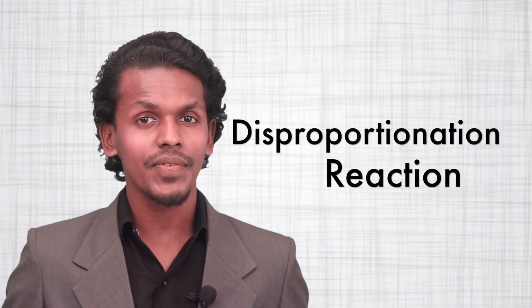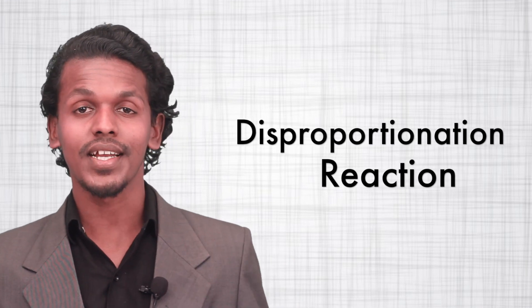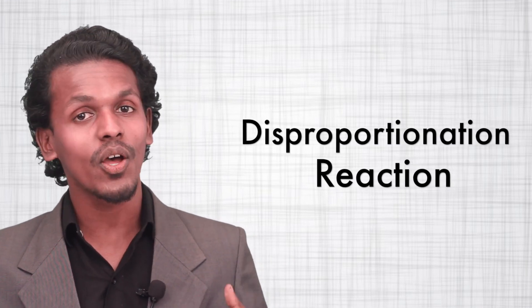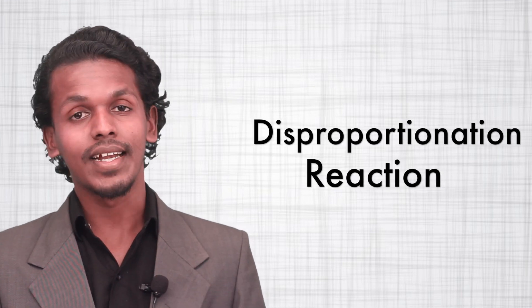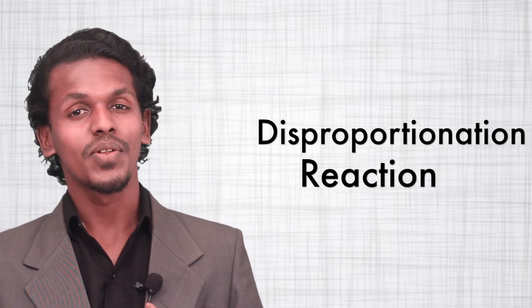Hey friends, in the last lecture we studied what are Redox Reactions and what are the types of Redox Reactions. And now we are going to learn about the type of Redox Reaction number 4, that is Disproportionation Reaction. So let us see what is this.